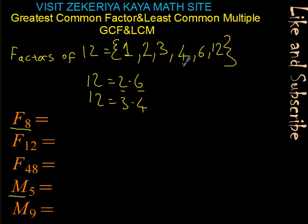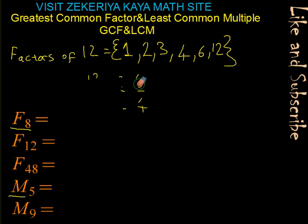After 3, the next number to check would be 4, then 5. But there is no need for that, because when you get the same numbers appearing on the other side, you don't have to check the rest.